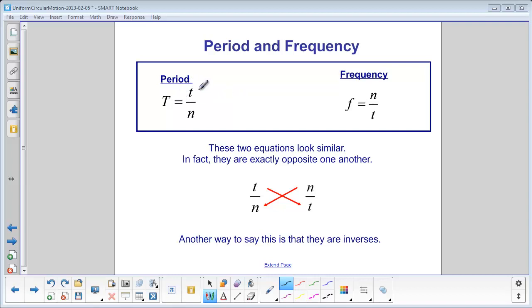Since period is time over number of cycles, and frequency is number of cycles over time, we say that period and frequency are inverses of each other.